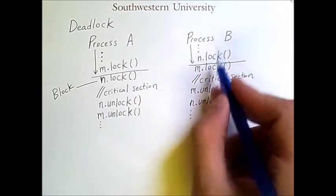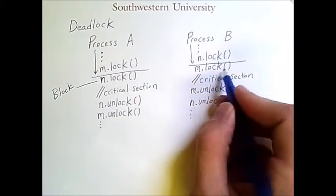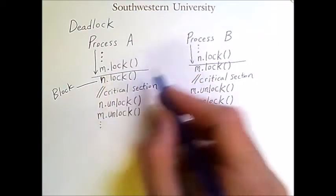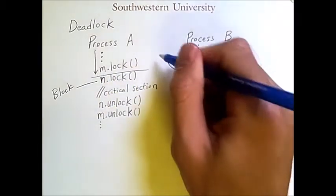Similarly, if process B tries to lock mutex M, well that's also already been claimed, so it will block.